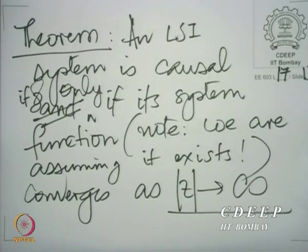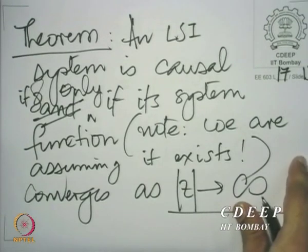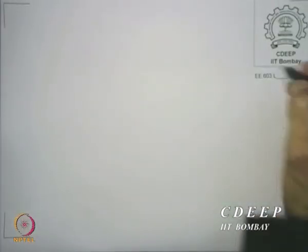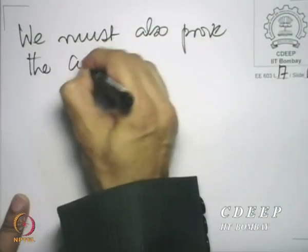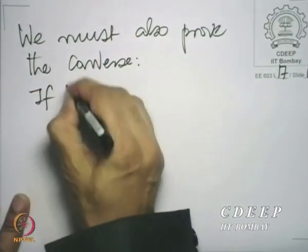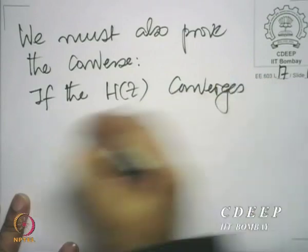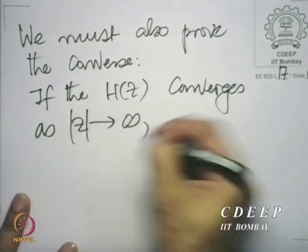The converse is: if the Z transform converges as mod Z tends to infinity, then the system has to be causal. I will give you the scheme of the proof and leave you to complete the details. You must also prove that if the system function converges as mod Z tends to infinity, the system is causal.